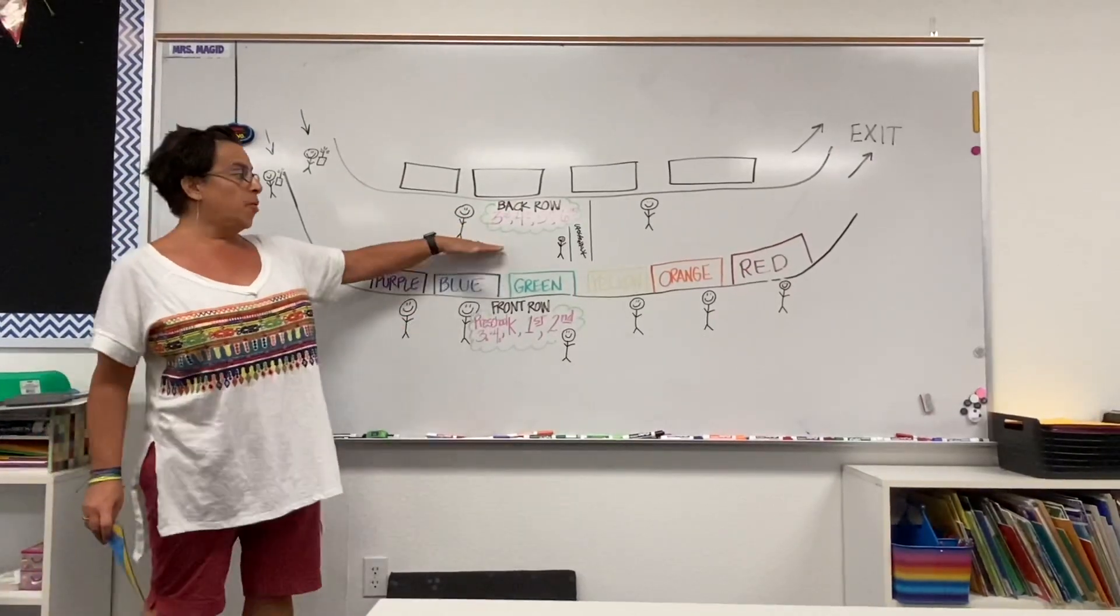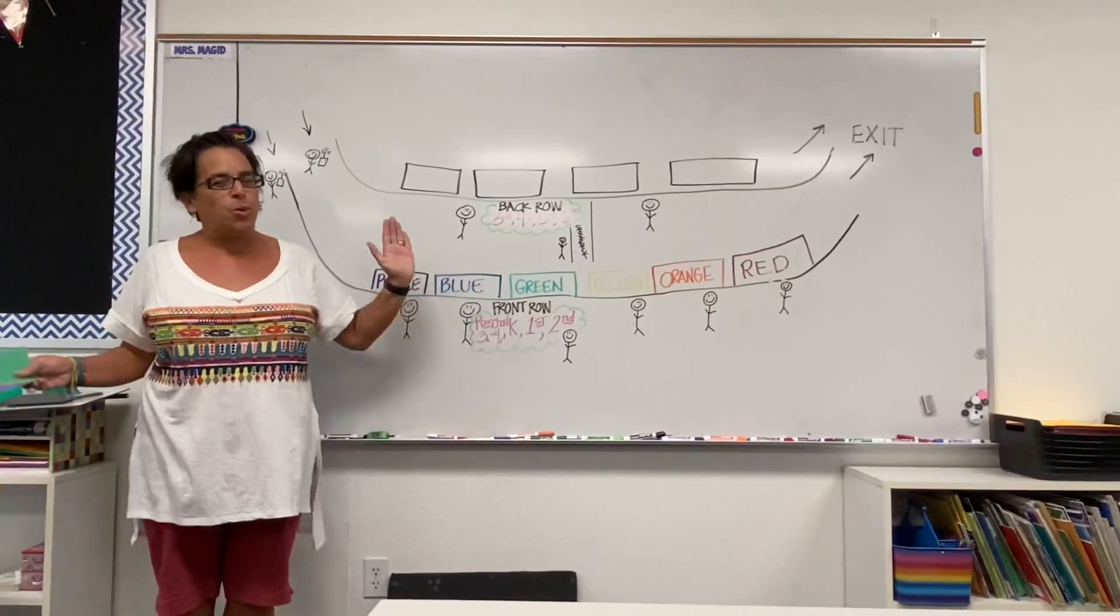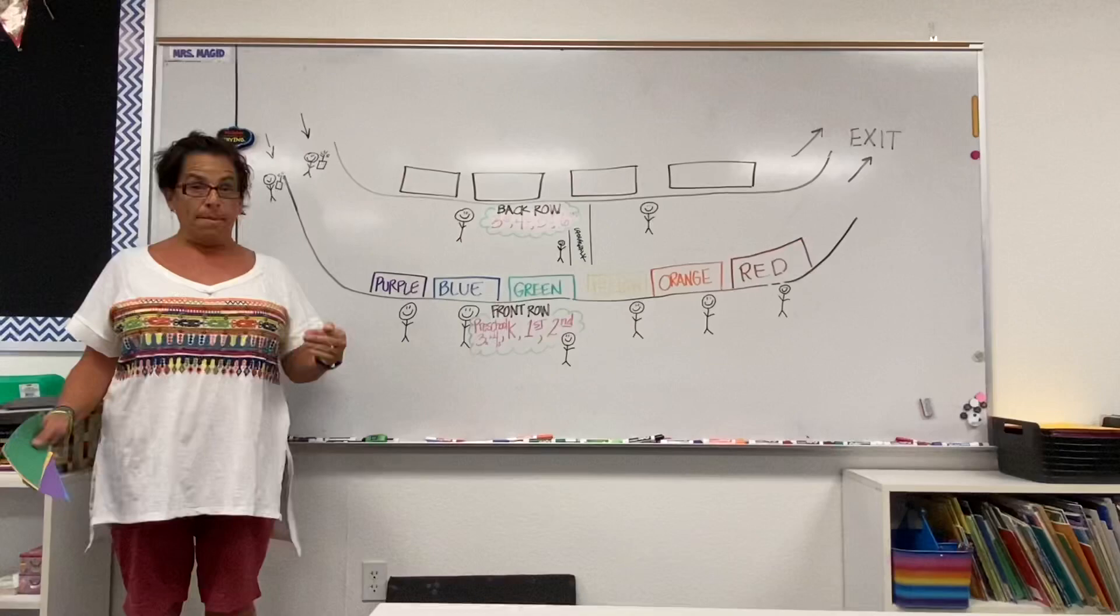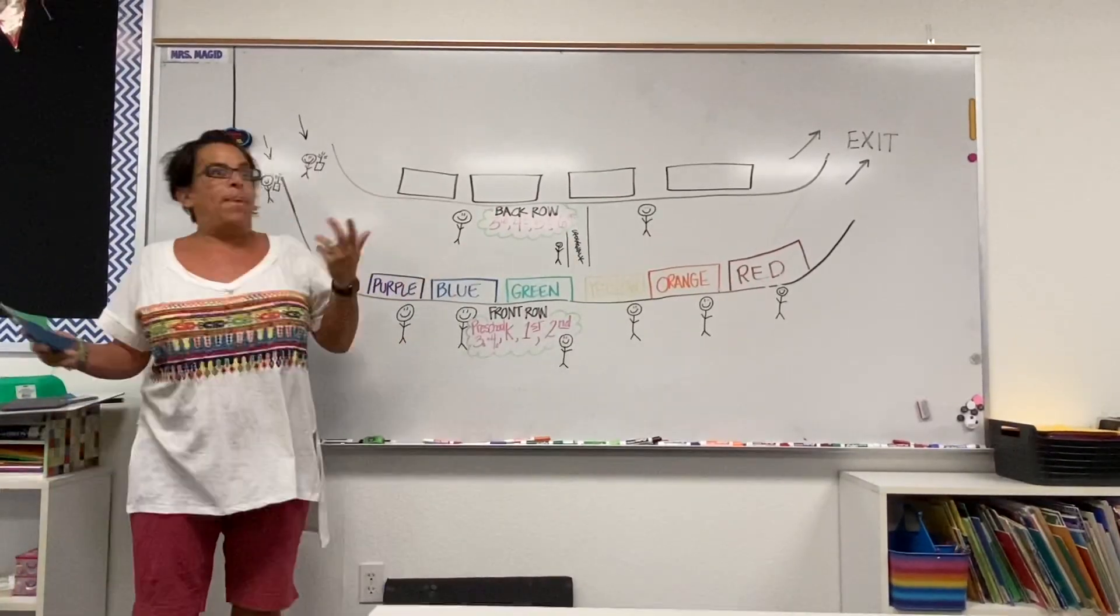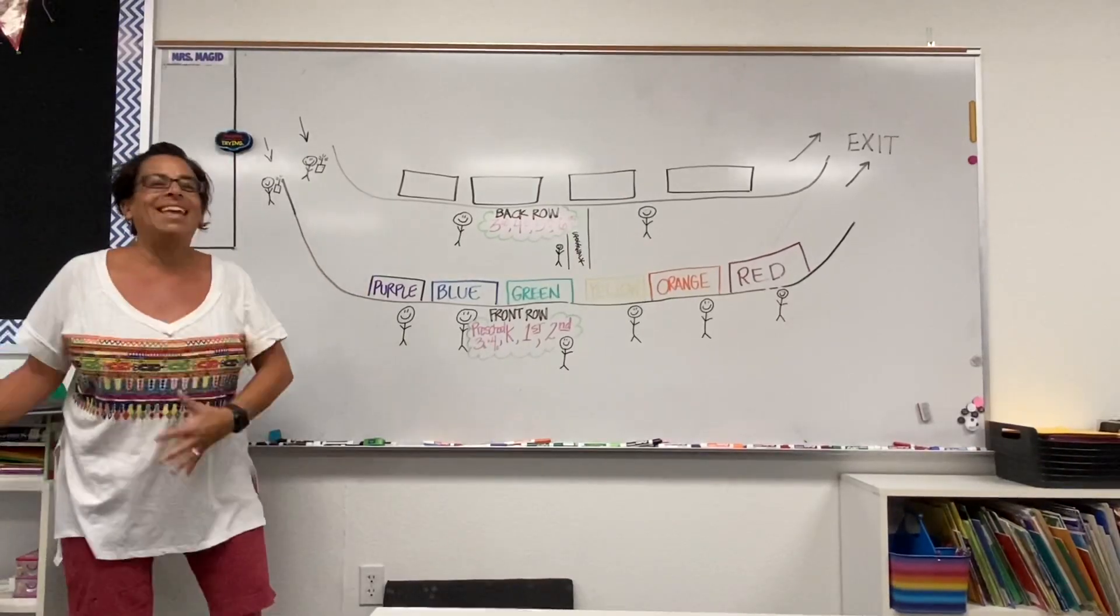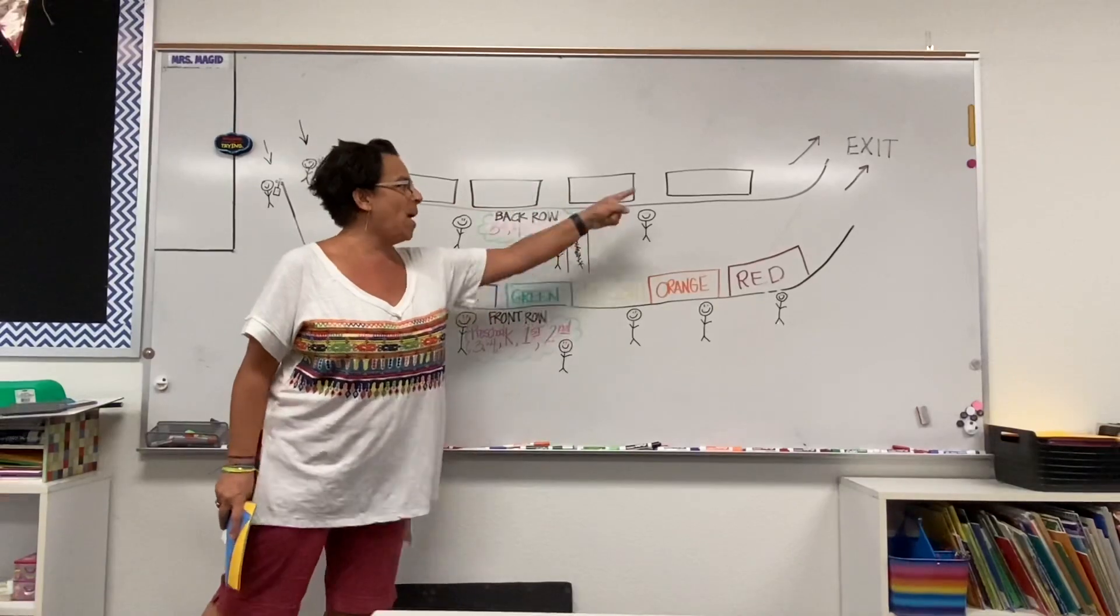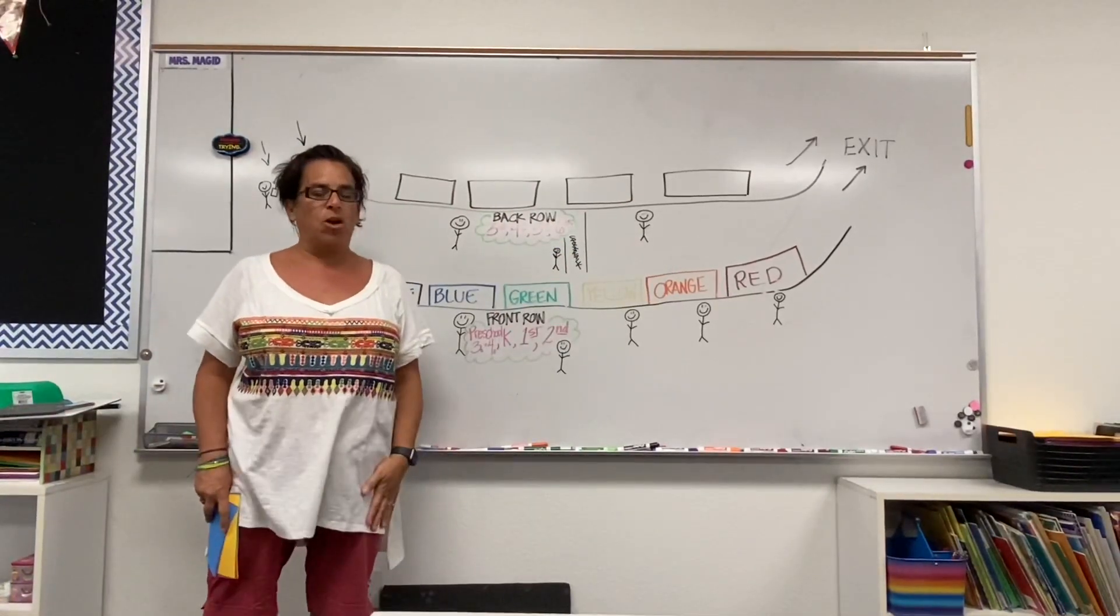The reason why we have third grade and above is because they already know how to do the crosswalk. They know how to find their car. So they're going to hear the name and back row. Once they hear Maggett back row, all the Maggett kids will come out. They'll know to go to the crosswalk, go back there, and there'll be one or two staff members back there helping kids find their cars and getting into the cars.